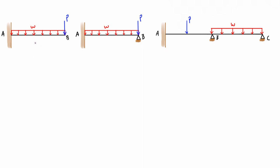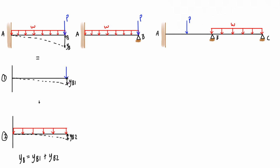If you remember when we talked about the method of superposition: if we wanted to find the deflection at point B for the statically determinate beam, the principle of superposition states that the actual deflection at B is the sum of the deflection caused by only the point load plus the deflection from only the distributed load. You can find those individual deflections using the moment area method, tables, or double integration, then add them together.